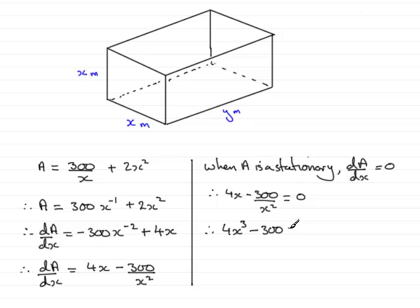Adding 300 to both sides gives 4x³ = 300. Dividing both sides by 4 gives x³ = 75.